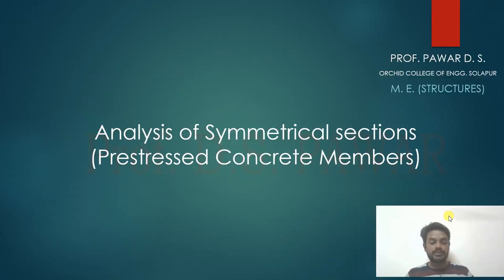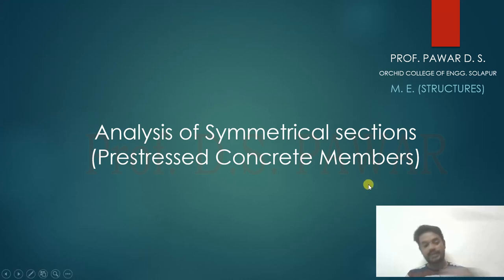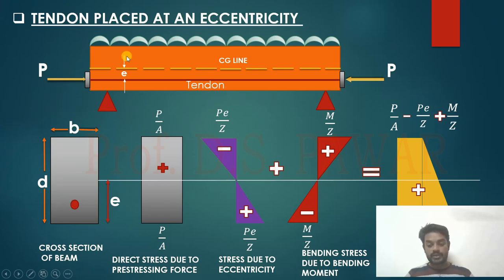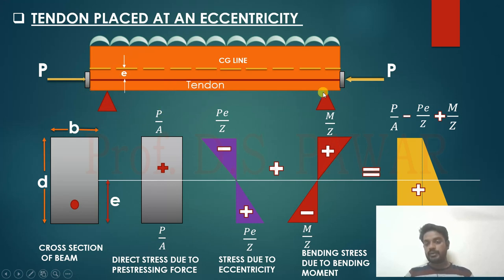Good morning. In this session on prestressed concrete members, we are going to see the analysis of a symmetrical section of a prestressed concrete beam. Today we will see the case when the tendon is placed with some eccentricity. In the last lecture, the tendon was placed exactly at the central axis. Today we will see the various stresses when the tendon is placed with eccentricity. Eccentricity here is the distance from the tendon to the centroidal axis of the beam. The prestressing force is applied on a simply supported beam.